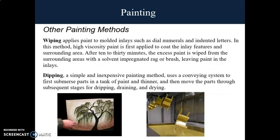Wiping applies paint to molded inlays such as dial numerals and indented letters. In this method, high viscosity paint is first applied to coat the inlay features and surrounding areas. After a period of time, usually 10 to 30 minutes, the excess paint is wiped from the surrounding area with a solvent-impregnated pad or brush, leaving paint in the inlays.